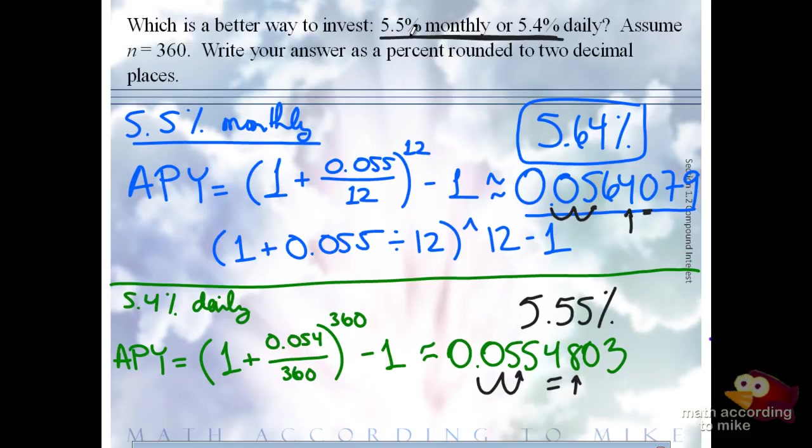If you're going to invest, which one do you want to use? 5.5% monthly. Because you ended up with a higher corresponding simple interest rate. So you want the 5.5% monthly.